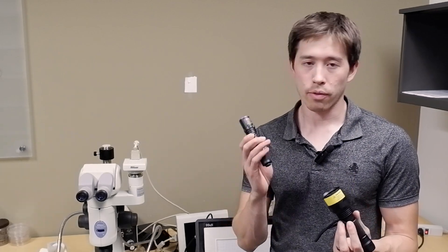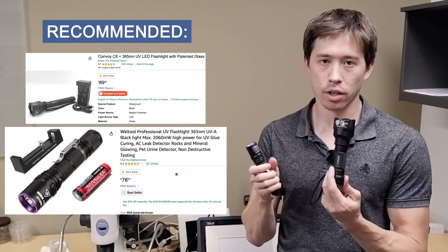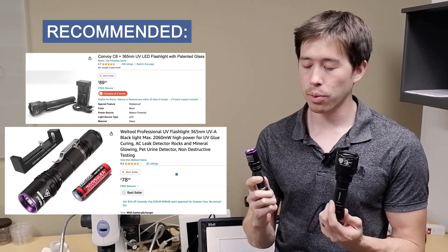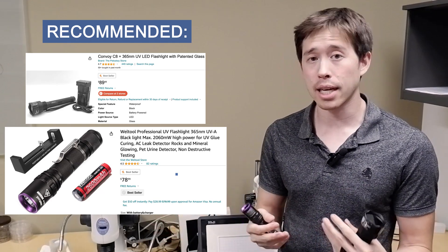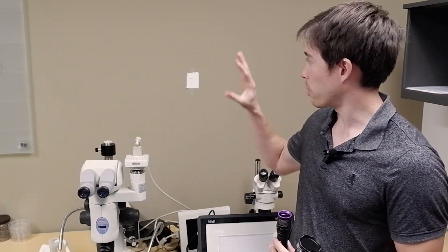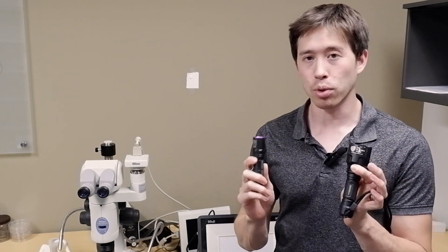Of all the different lights we tested, these are the two that we suggest you use. We have the Well Tool and then we also have the Convoy. Both of these are going to work pretty well. We'll show you how they illuminate the mites. There's also two different tests you can do. One is pointing it at a spot on the wall and seeing how well it illuminates it. And then another one is looking at something like a $100 bill or anything else that has a fluorescent strip on it.